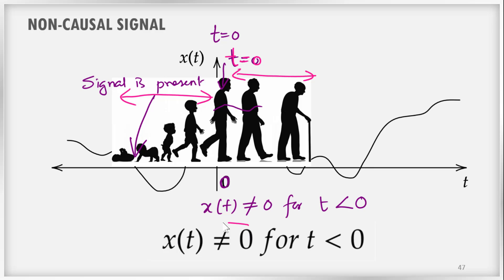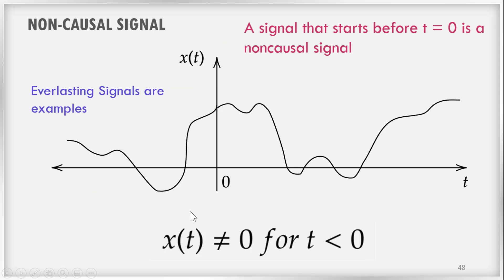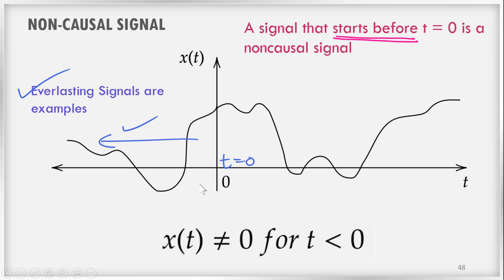Mathematically, x(t) ≠ 0 for t less than 0, meaning the signal is present in the negative time axis as well. Such signals are known as non-causal signals. A signal that starts before time t=0 — that is, a signal present before t=0 — is called a non-causal signal. Examples are everlasting signals, which can be periodic or non-periodic.